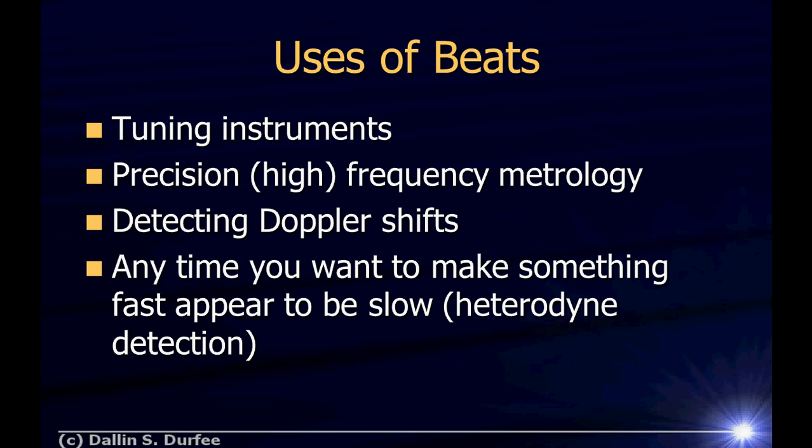You could also use it to detect Doppler shifts. If you're building a device to measure how fast cars are moving by bouncing radio waves off of them, if you take the wave you sent out and mix it with the wave that's coming back, add the two of them together, you'll get beats, and from the beat rate, you can determine how much the frequency was shifted by. So basically, anytime you want anything fast to appear slow, if I have a fast signal and I can compare it to another fast signal, I can use beats to figure out the difference between the two. This is known as heterodyne detection.